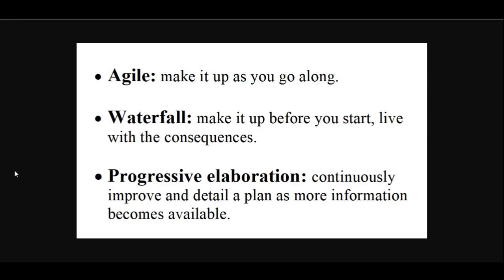For Progressive Elaboration: it involves continuously improving and detailing a plan as more detailed and specific information and more accurate estimates become available. Progressive Elaboration allows a project management team to define work and manage it to a greater level of detail as the project evolves. Some tasks and scopes may not be known in advance, which leads to some uncertainty in completion time. As the project progresses and more tasks are completed, the uncertainty for the completion time is reduced.